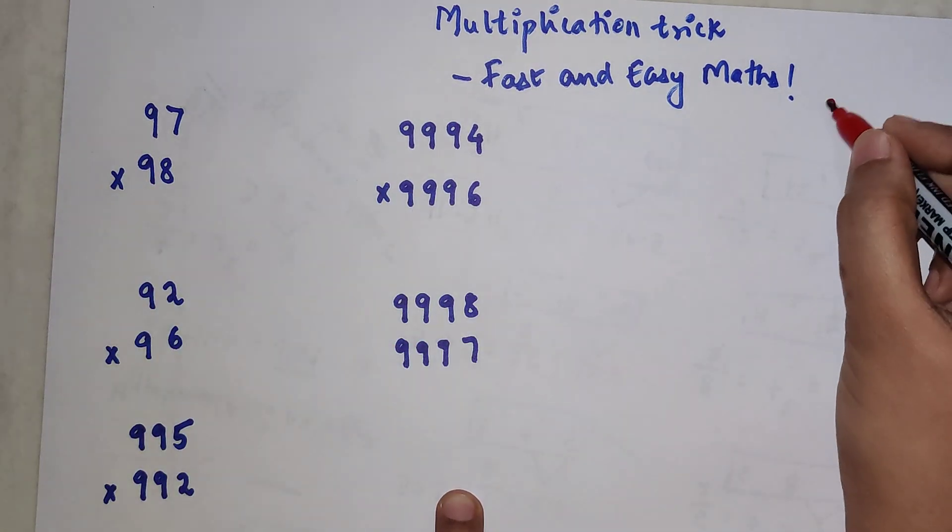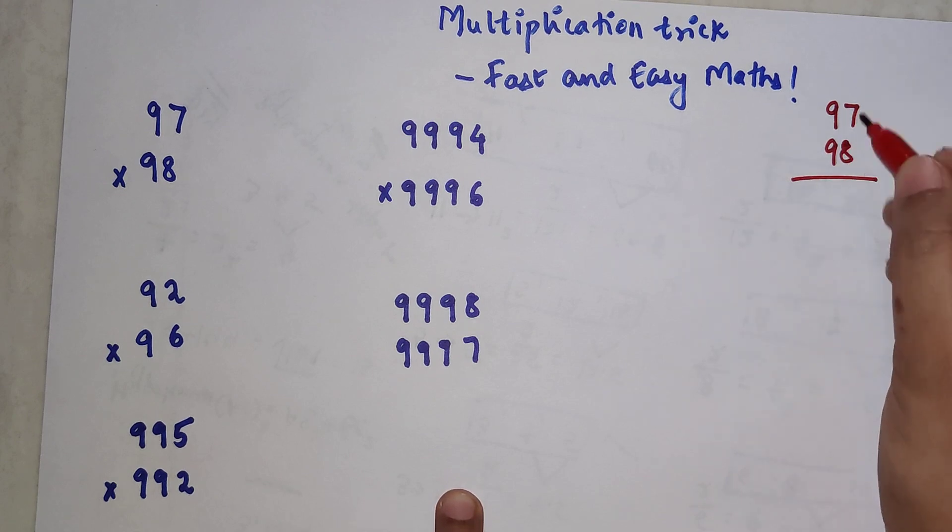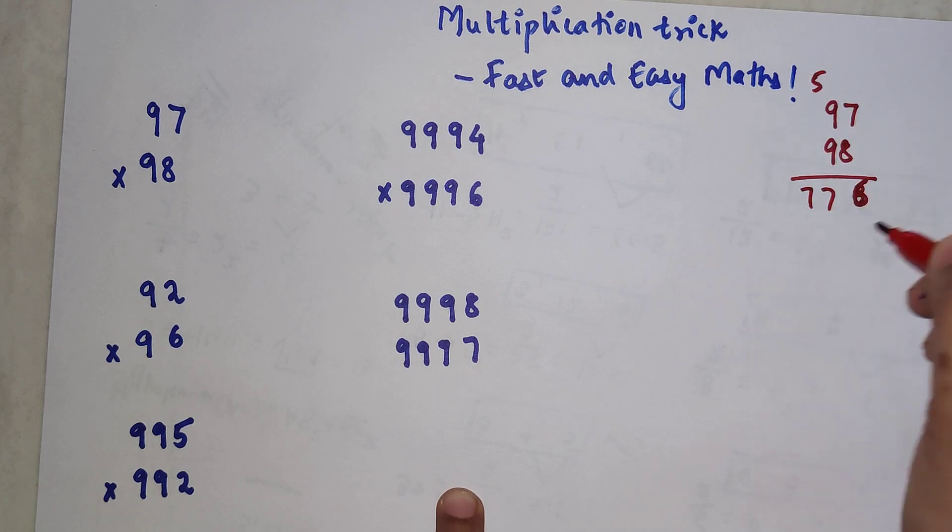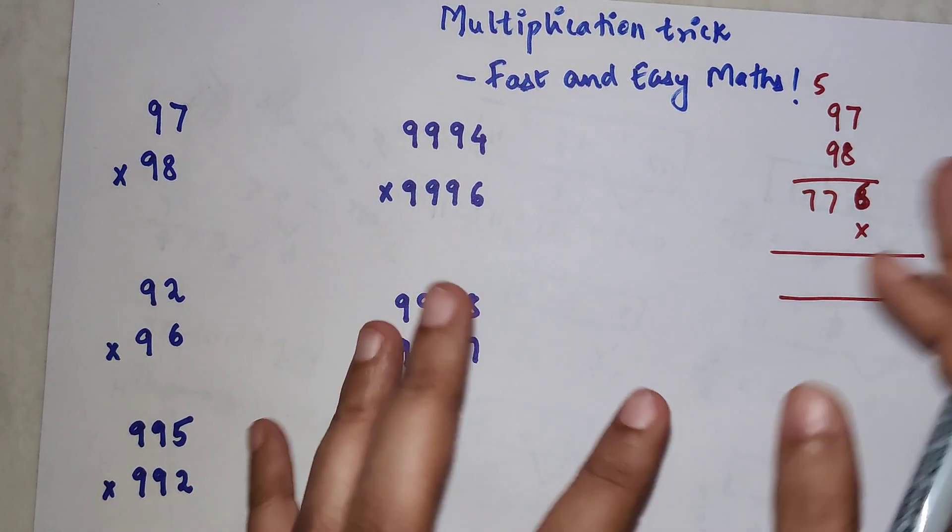Now, when you do 97 into 98, first you do 8 into 7 which gets you 56, so 6 carry 5. Then 9 into 7 and 9 into 8 gets you 72, then add 5 that gets you 77. Then you multiply by 9 again and add it - that's the actual step you'd be doing in the normal method.